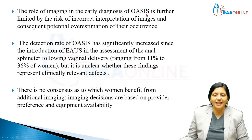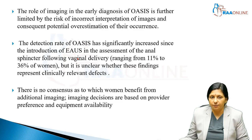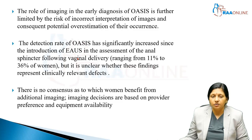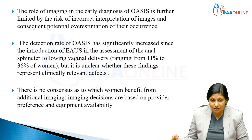The role of imaging in the early diagnosis of obstetrical anal sphincter damage is further limited by the risk of incorrect interpretation of images and consequent potential overestimation of their occurrences. The detection rate of anal sphincter injury has significantly increased since the introduction of the endoanal ultrasound. The OASIS incidence was 11%, but with the use of endoanal ultrasound the detection rate is 36% of women.